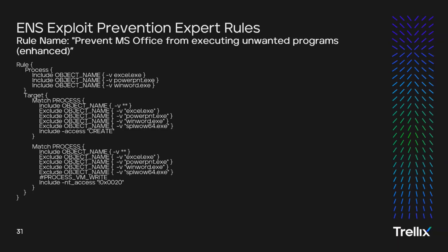Now let's look at expert rules. Expert rules are created to prevent buffer overflow and illegal API use by exploits, and to protect files, registry keys, registry values, processes, and services. In this case, it's an enhanced expert level rule that supersedes rule ID 6107, MS Word trying to execute unwanted programs. This rule adds protection for threats to execute other programs not covered by signature 6107. If you implement this expert rule, you should disable exploit prevention signature 6107.